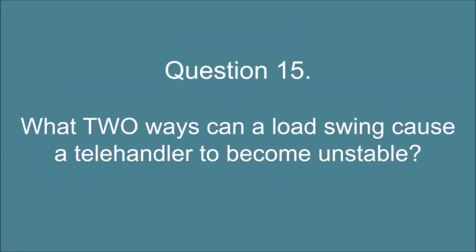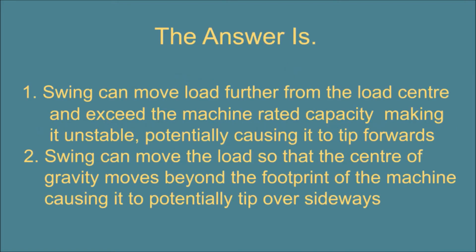Question 15. What two ways can a load swing cause a telehandler to become unstable? The answer is: 1. Swing can move load further from the load center and exceed the machine-rated capacity making it unstable, potentially causing it to tip forwards. 2. Swing can move the load so that the center of gravity moves beyond the footprint of the machine causing it to potentially tip over sideways.